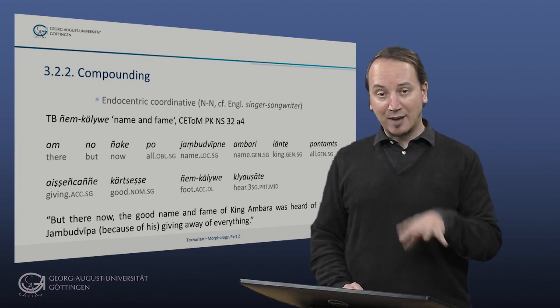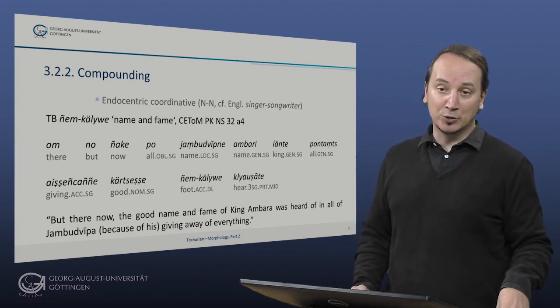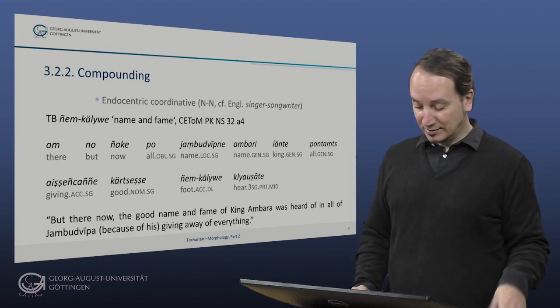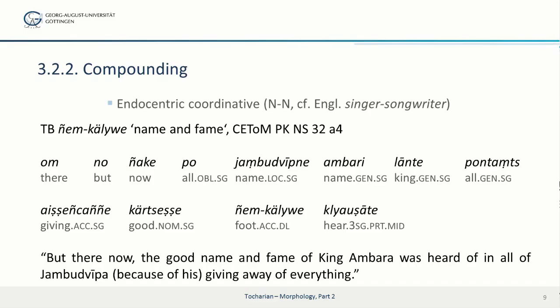Our passage here is from the Ambara Jataka, again a Buddhist story about a king called Ambara. Omno nyake po Czambutwipne ambarilante pontans, aishenchanje kurcesse Niemkylve kliausshate, but there now the good name and fame of king Ambara was heard of in all of Czambutwipa because of his giving away of everything. So far Kylve is unfortunately only attested in this compound, however from our accent rules we know that the simplex would have been Kalve.